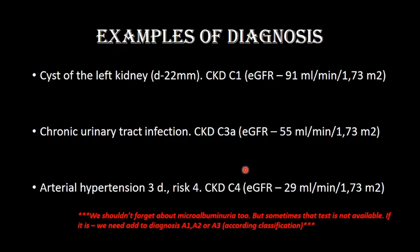Let's practice writing a few diagnoses to see how to use CKD. A patient comes to us with an investigation, and in that investigation a cyst of the left kidney has been found. We write it down — it would be good to include the diameter of the cyst — then CKD according to the left kidney. The estimated glomerular filtration rate is 91, which is a normal value, but structural damage is present, so G1 will be established.